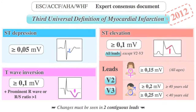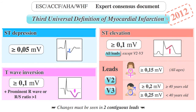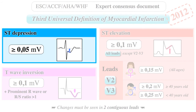The third universal definition of myocardial infarction published in 2012 defined significant ST depressions as new horizontal or downsloping ST depression greater or equal to 0.05 mV in two contiguous leads.